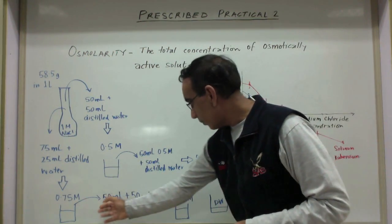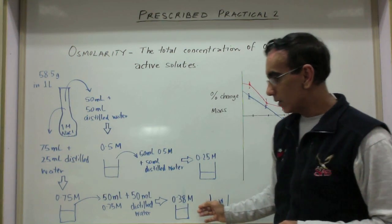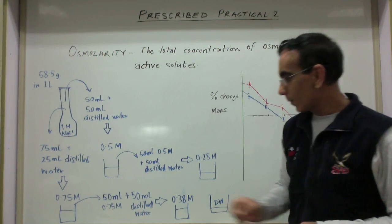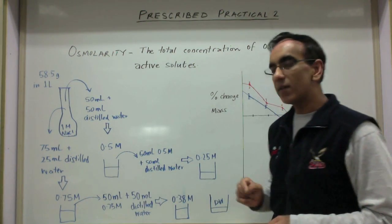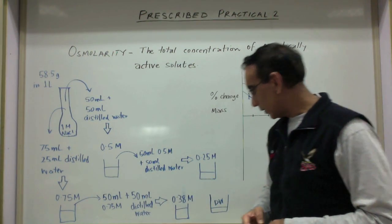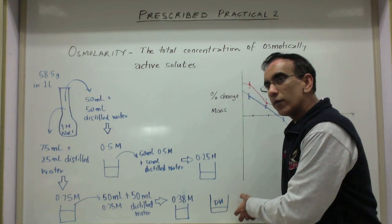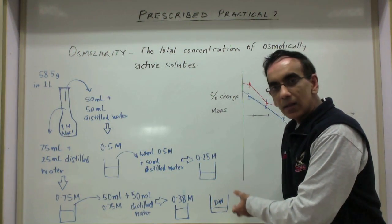And then to get a 0.38 molar solution, approximately 50% of the 0.75 molar, you take 50 milliliters of the 0.75 and add 50 milliliters of distilled water. We will also use distilled water as one of the solutions in which we immerse the pumpkin in.